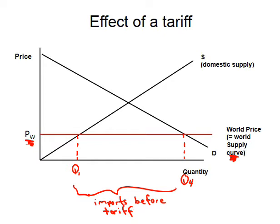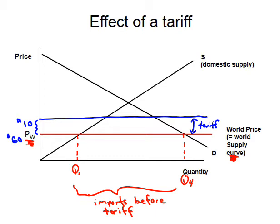Now let's impose a tariff. A tariff is a tax on imports, so we take the world supply curve and shift it up by the amount of the tariff. For instance, if the tariff were $10, this distance equals $10 — so the world price could be $60 and with the tariff it shifts up to $70. This new curve is the world supply curve with tariff.